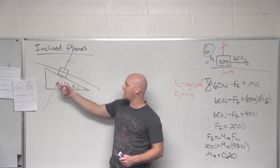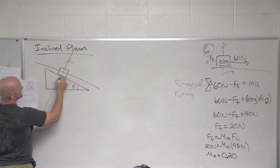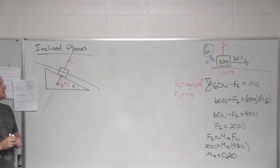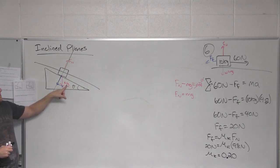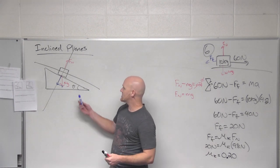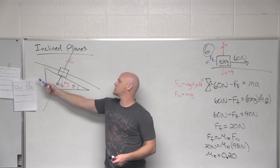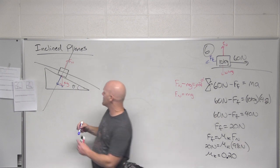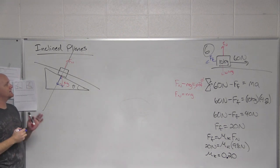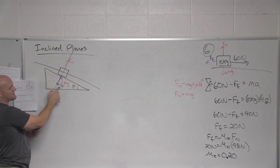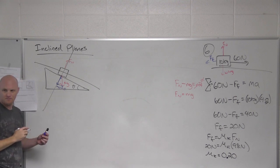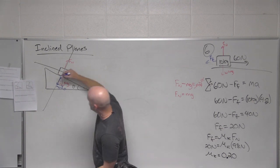The weight has components in both the new x and the new y, so we have to break it up into components using a right triangle. The new x component and new y component are related to mg as either mg sine theta or mg cosine theta. This angle theta in the triangle is the same as the angle of the incline. The x component — the opposite side — is mg sine theta, and the adjacent side is mg cosine theta.